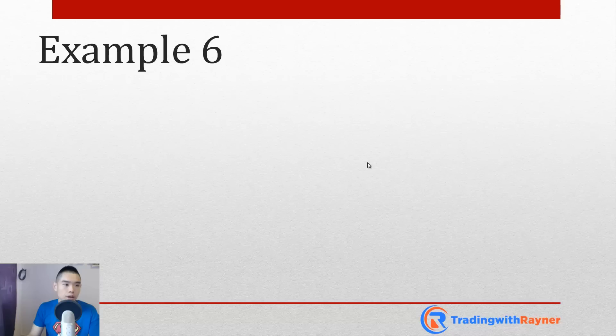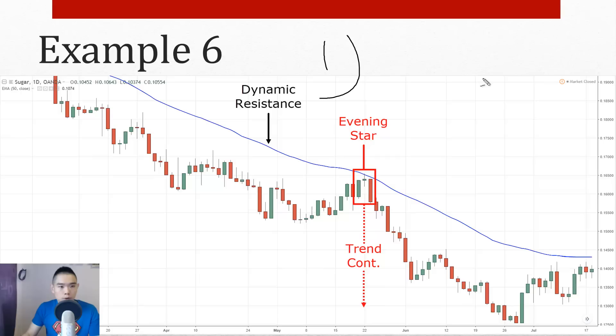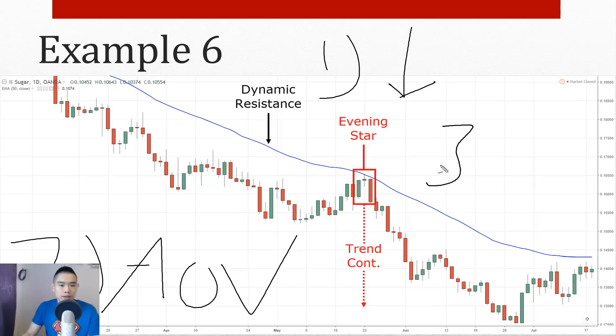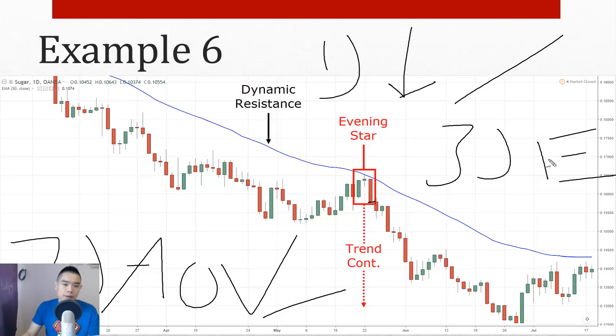Example six: trend is down. Area of value: the market is respecting the 50 MA. Entry trigger: an evening star — price closed higher, then an indecision candle, then smashed lower reversing near the lows. We have all three criteria: downtrend, 50 MA as area of value, and the evening star bearish reversal pattern.